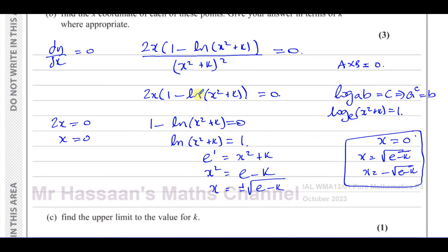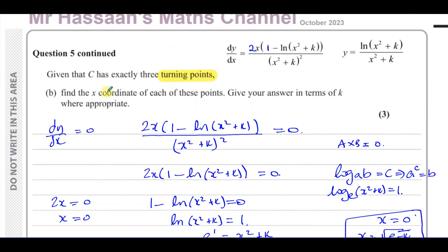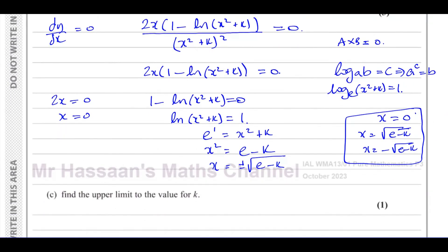Those are the x-coordinates of the three turning points. They didn't ask us to find the full coordinates, just the x-coordinate of each turning point, so we don't need to find the y-coordinates. The question is only three marks, and we've found the three turning points, so we can stop there.